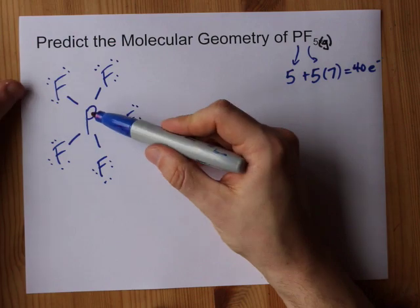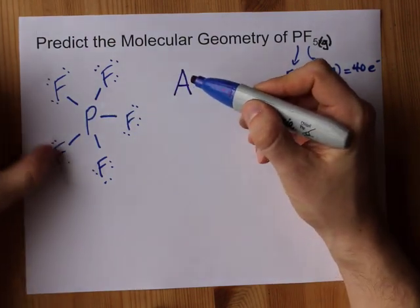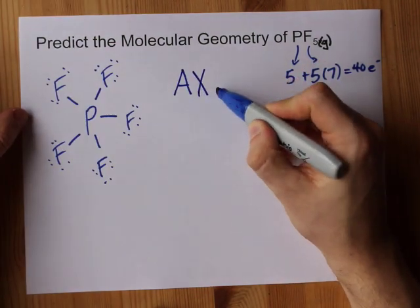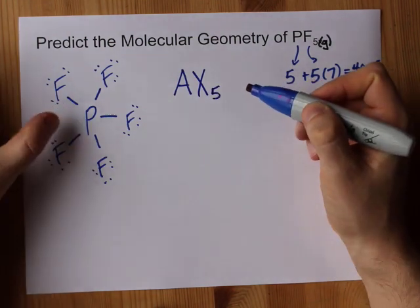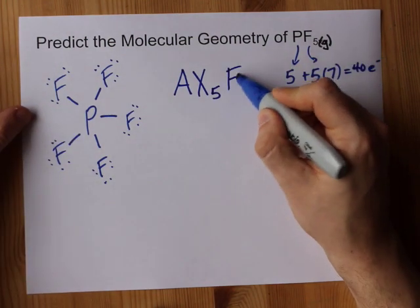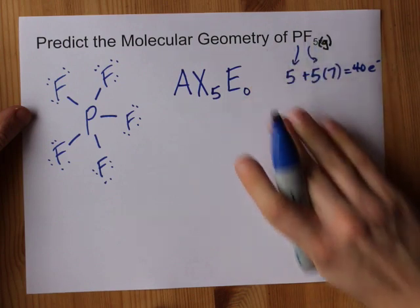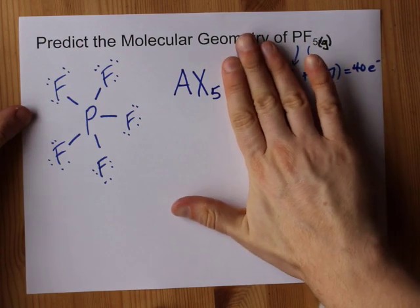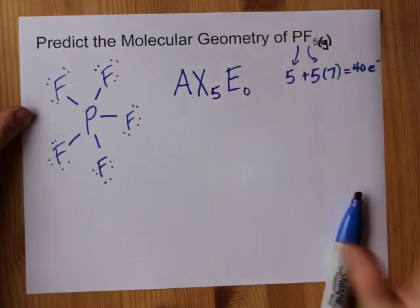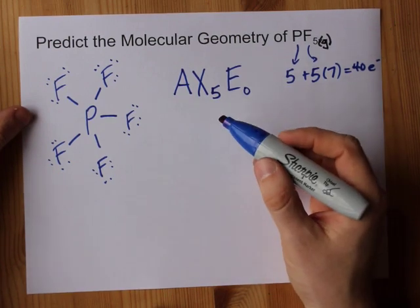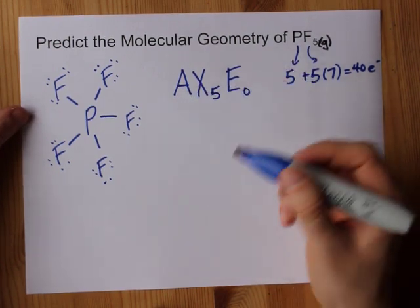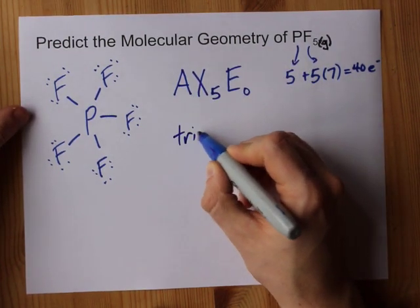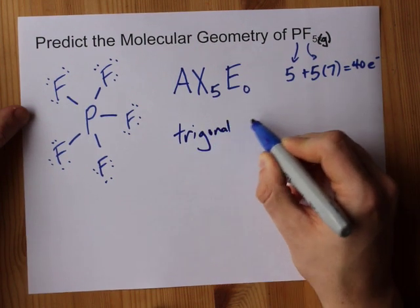This is one center atom surrounded by five atoms, that's AX5, and there are no lone pairs on the center. That makes it E0. That E0 is super optional. Lots of teachers call it AX5. And your job as a student is to memorize that AX5 is called trigonal bipyramidal.